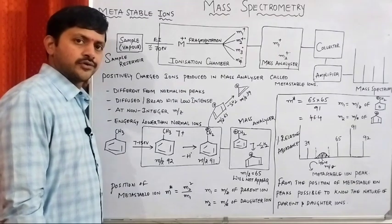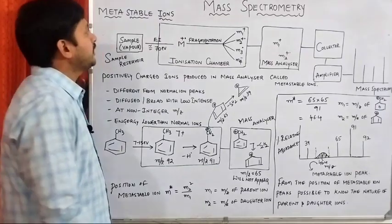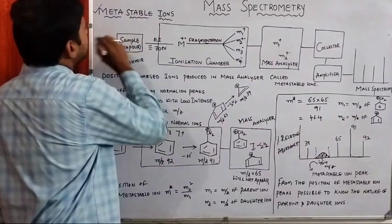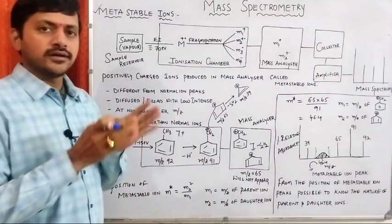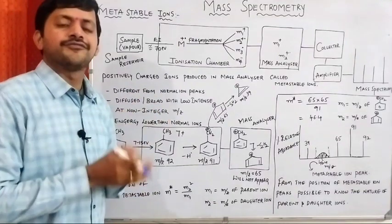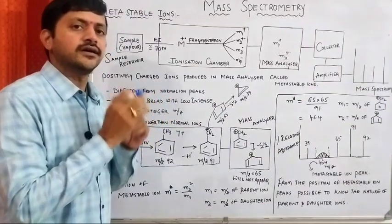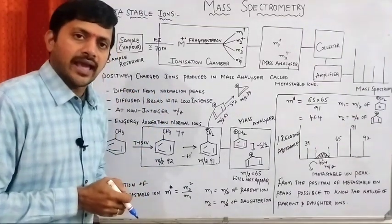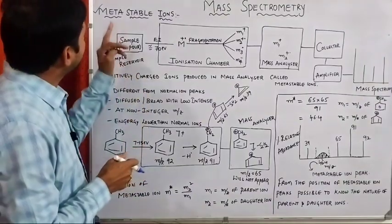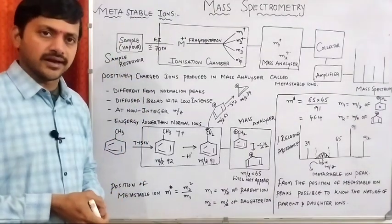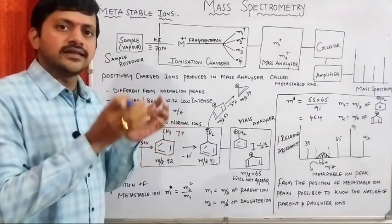Hello everyone, welcome back to our channel. Let's discuss the next topic: metastable ions. We had a discussion on the different five types of ions which are present during the ionization and fragmentation process. The next one is metastable ions.